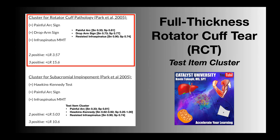In this video, we're going to be discussing the test item cluster for a full thickness rotator cuff tear. This cluster was evaluated by Park et al. in 2005, and it consists of three tests.